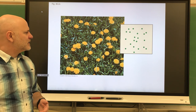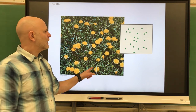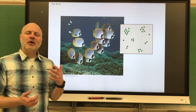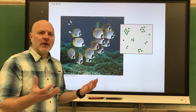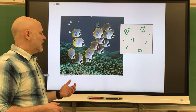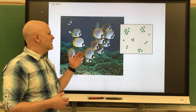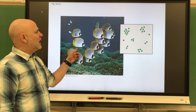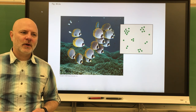Next is random dispersal, as seen with dandelions — wherever a seed lands and can grow, it grows, so there is no pattern. Lastly is clumped dispersal, due to an uneven distribution of resources or social interactions. For example, at an oasis in a desert, most life is clustered where the water is. Social interactions also cause clumping — fish schooling together or prey animals herding provides protection, since there are more eyes to spot predators and each individual's chance of being caught is reduced.